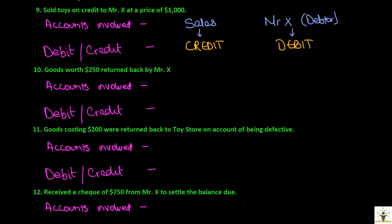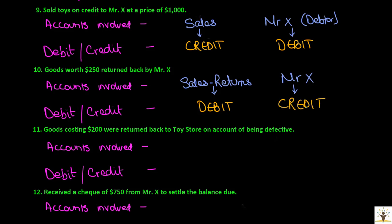Transaction: goods worth $250 returned back by Mr. X. The accounts involved are sales returns and Mr. X. We had credited sales when goods were being sold; sales returns is the opposite transaction — hence sales returns is debited, as the business is receiving back its goods and goods is an asset. Once Mr. X returns the goods worth $250, we will receive a lesser amount from Mr. X — hence Mr. X's balance is decreasing, and when an asset decreases it is credited — hence Mr. X is credited.